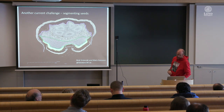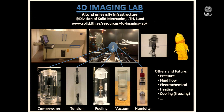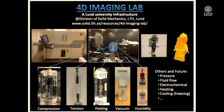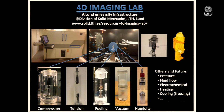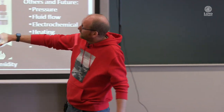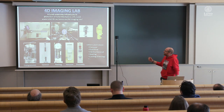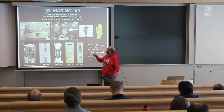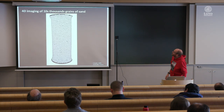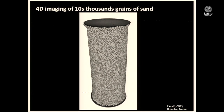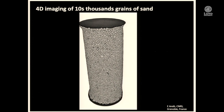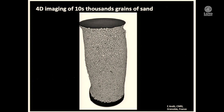Moving to the 4D aspect: the 4D Imaging Lab acquires sequential 3D images of a material under changing conditions. Custom stages are built for the rotation setup — in the lab, at synchrotrons, or at neutron sources — to compress, pull, peel, apply vacuum, or vary humidity. At different stages of the material's evolution, 3D pictures are taken to build a 4D movie. A demonstration shows around 50,000 grains of sand deformed in situ in a tomograph.